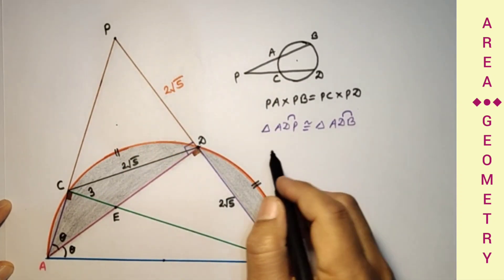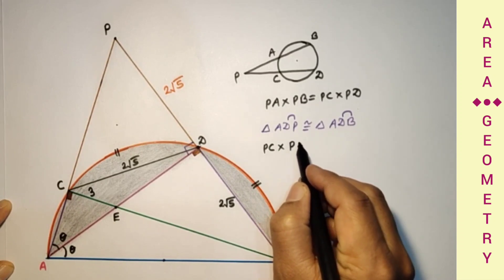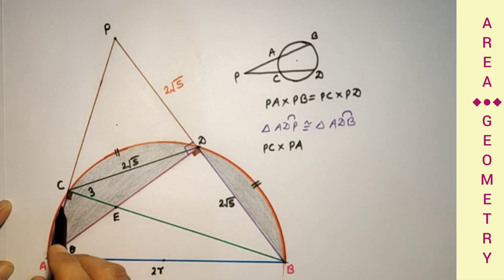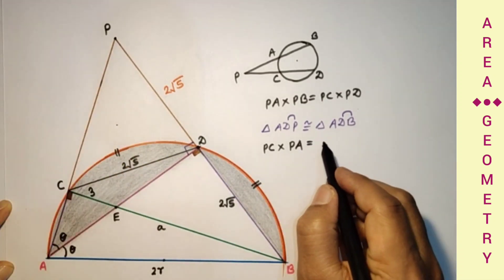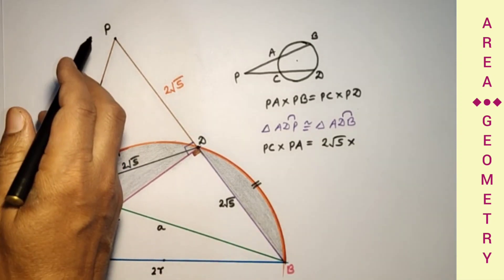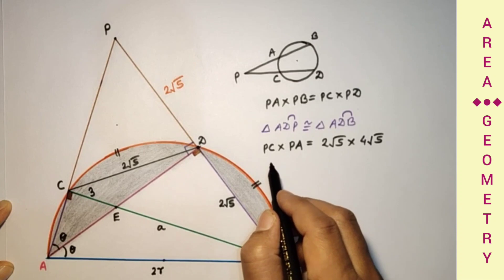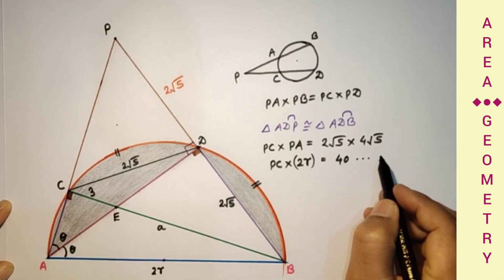Now applying the secant theorem: PC × PA = PD × PB. Since PA equals AB, let AB equal 2R, so AP equals 2R. PD is 2√5, and PB is twice PD which is 4√5. So PC × 2R equals 2√5 × 4√5 equals 40. This is our first relation: PC × 2R = 40.